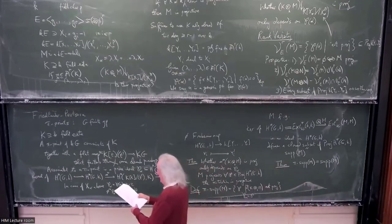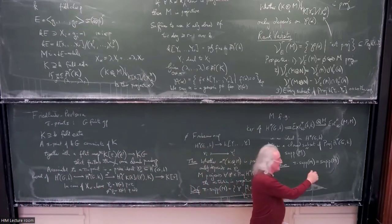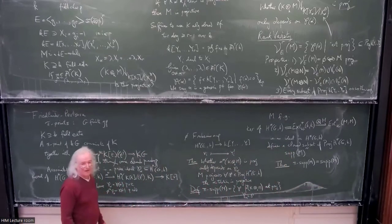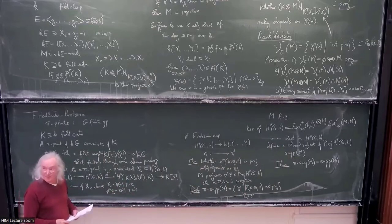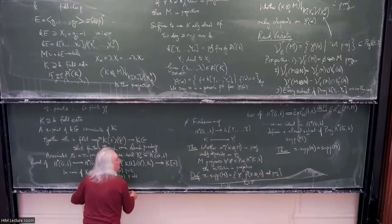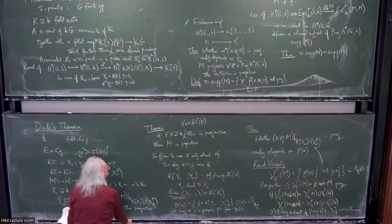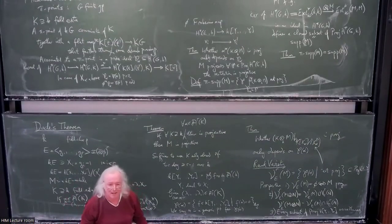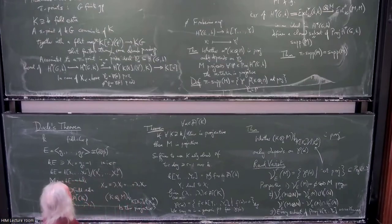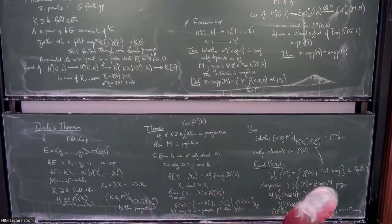For infinitely generated modules we need to define support using the stable module category. Why is it called pi-support? According to Eric Friedlander, pi is the first letter of Julia Pevtsova's name.